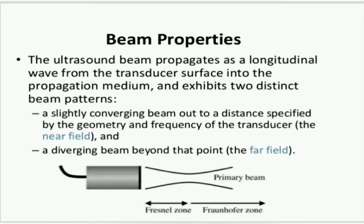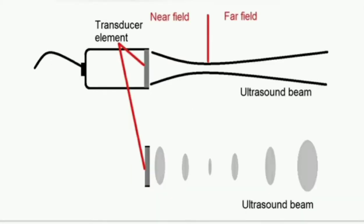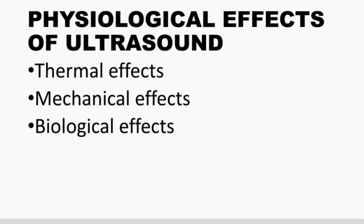The ultrasound beam exhibits two different beam patterns: one is the near field and the other is the far field. The near field is the field close to the transducer head, which has a converging beam. The far field is farther from the ultrasound head and has diverging beams. The near field is more intense than the far field and hence is more effective in treating certain conditions.